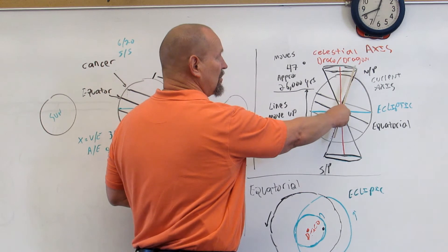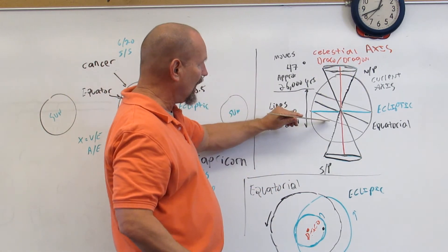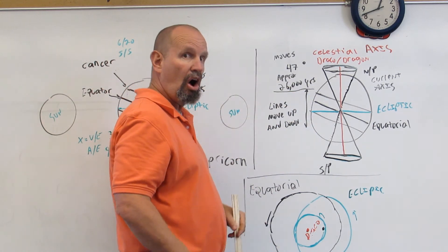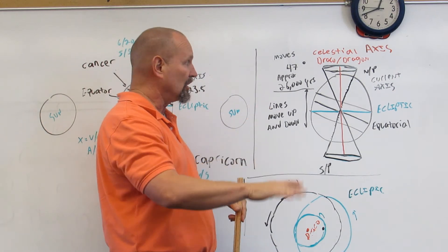When this moves across here, it causes these lines to move up and down along, not only from our orientation to the sky, but also on the Earth. So in other words...